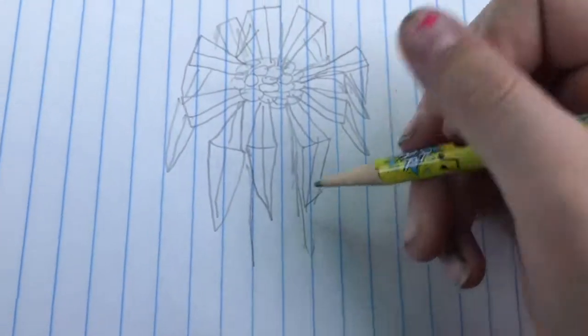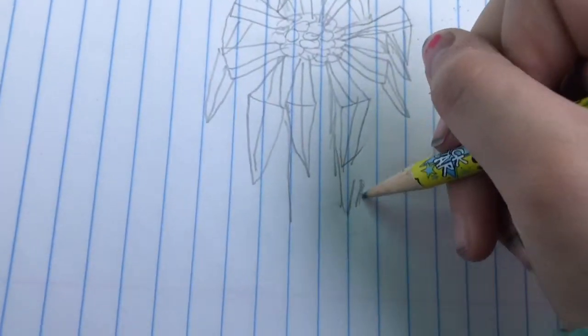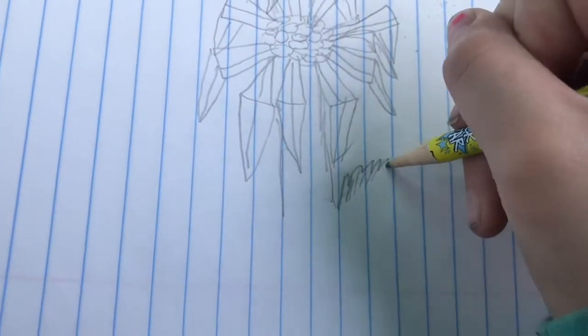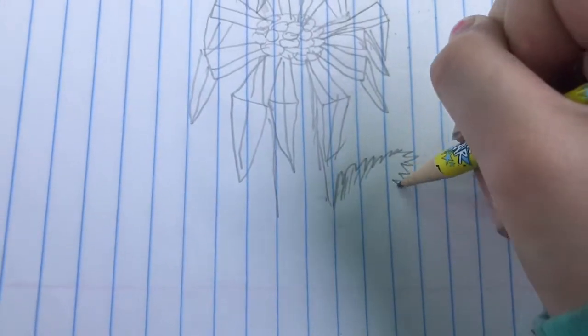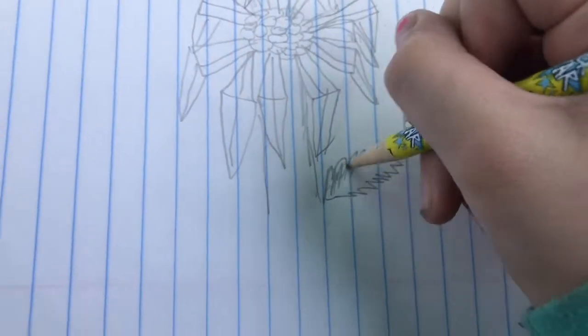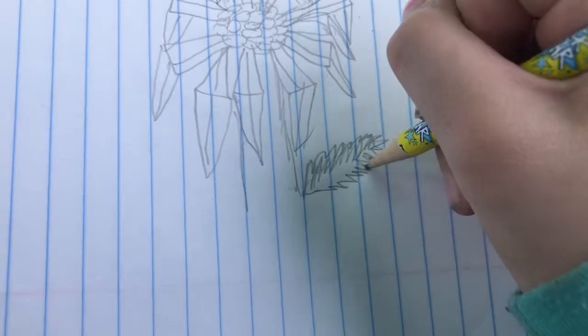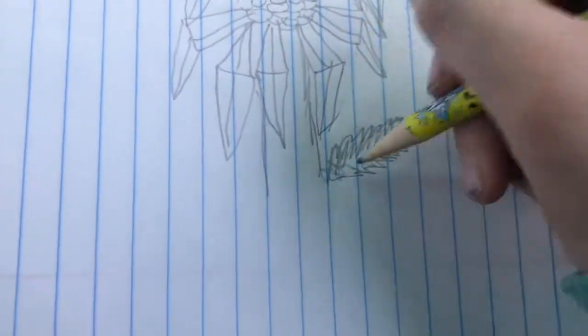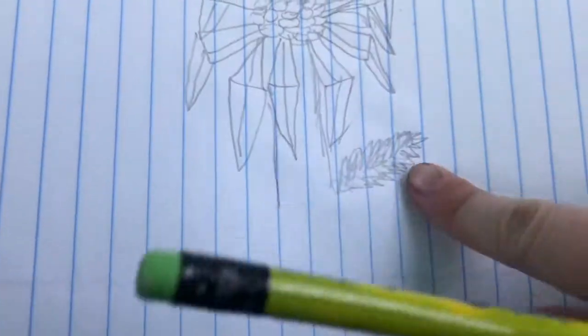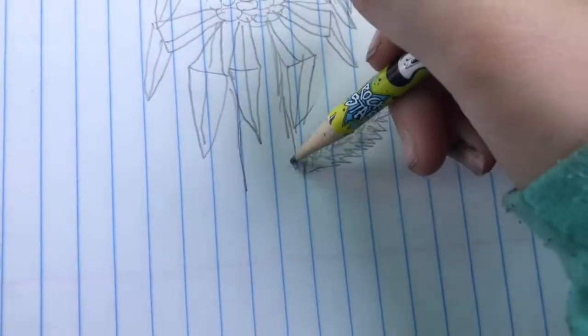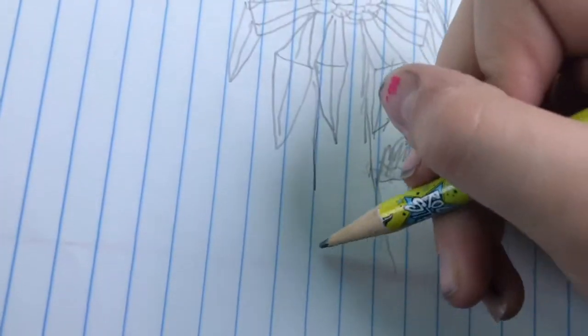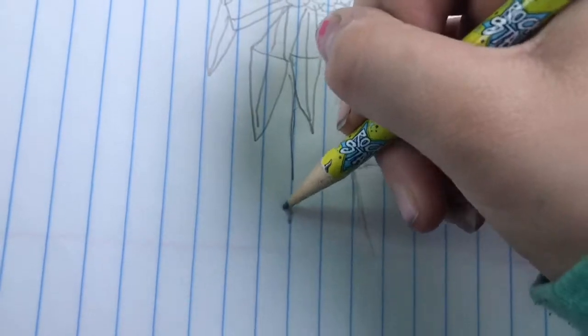We're going to start making a petal, sort of a jagged petal. It just looks like that. Now we are just going to keep going down.